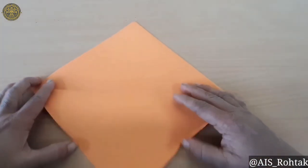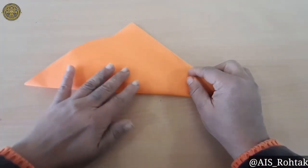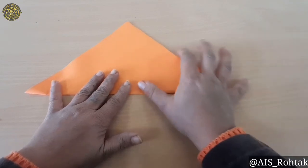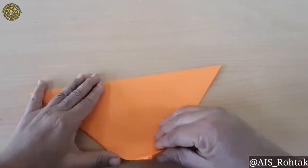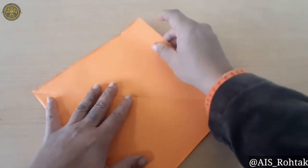First of all, take the square shape sheet and fold it like this. Press it with your fingers. Now open it like this.